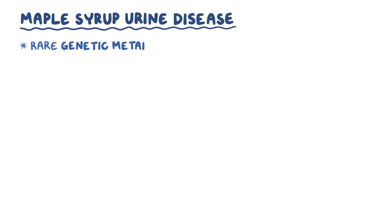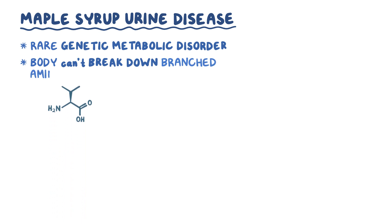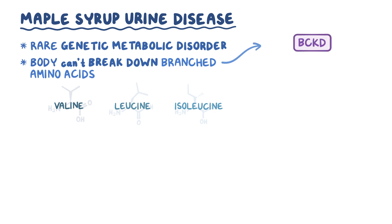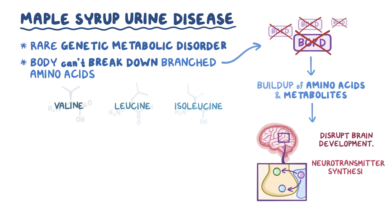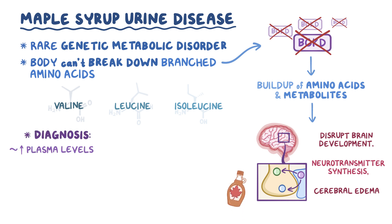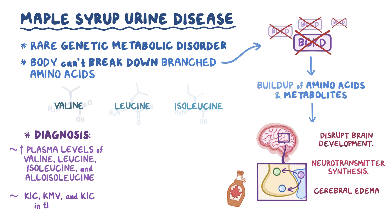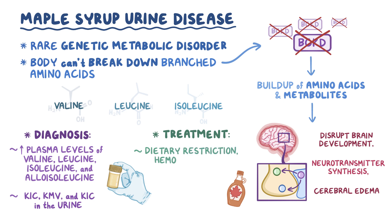As a quick recap: maple syrup urine disease is a rare recessive genetic metabolic disorder where the body can't break down branched-chain amino acids like valine, leucine, and isoleucine completely, due to a deficiency in branched-chain alpha-keto-acid dehydrogenase complexes. This causes a buildup of these amino acids and their metabolites, which can disrupt brain development, neurotransmitter synthesis, cause cerebral edema, and give urine a maple syrup odor. This disorder is diagnosed by elevated plasma levels of valine, leucine, isoleucine, and alloisoleucine in serum, and alpha-ketoisocaproate, alpha-keto-beta-methylvalerate, and alpha-ketoisovalerate in the urine. Treatment includes dietary restrictions, hemodialysis, and liver transplant.